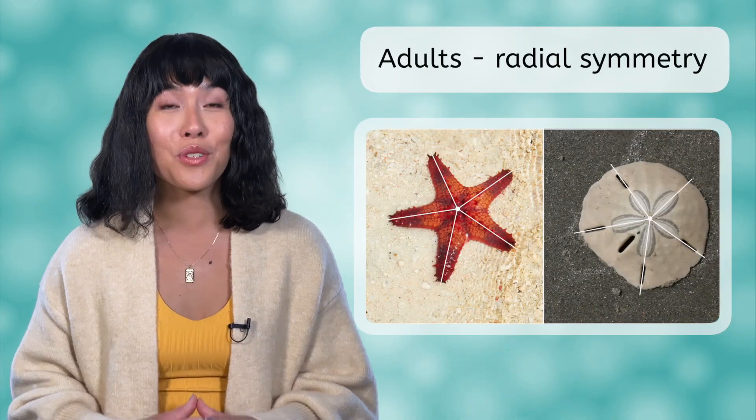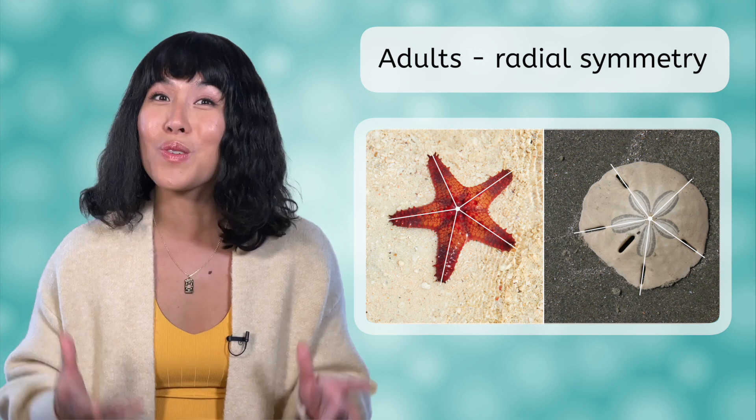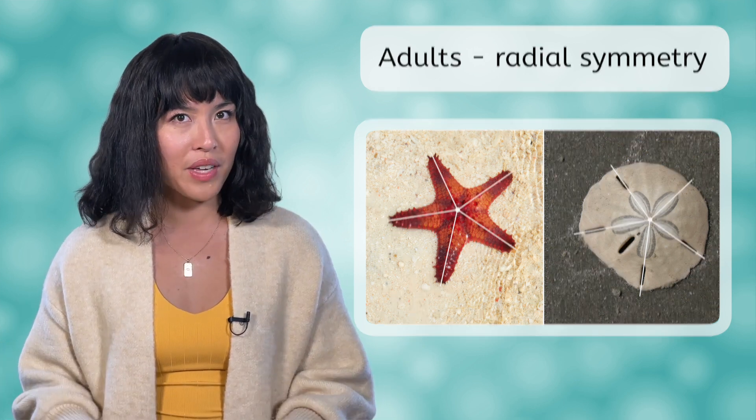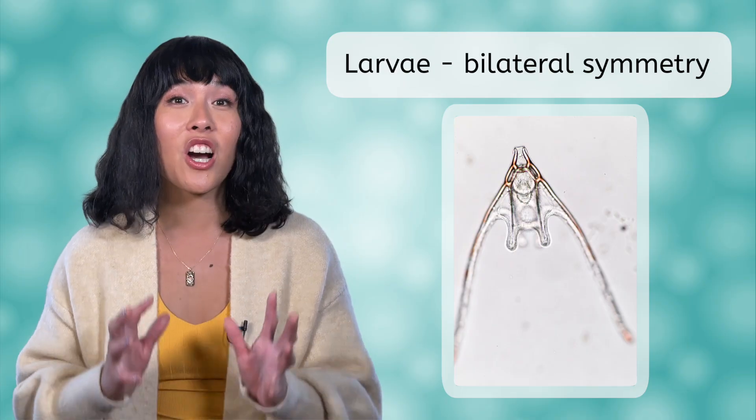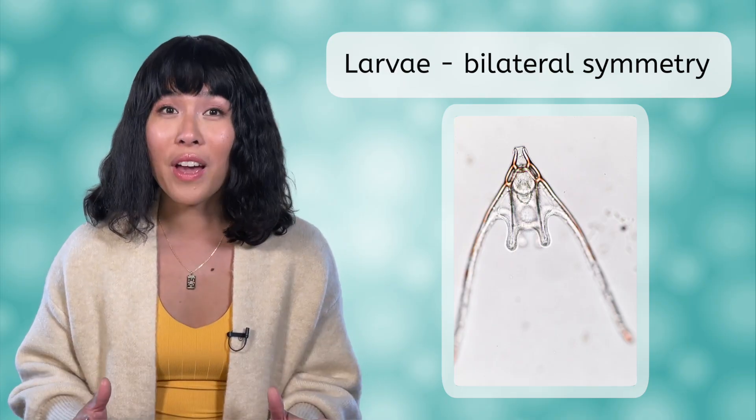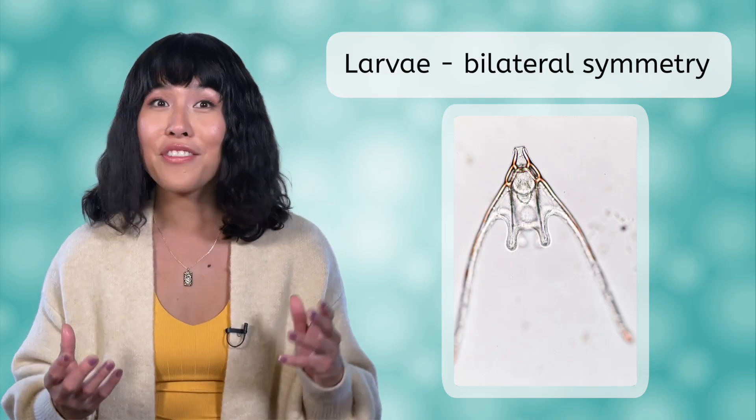What do you notice about all of these organisms? If you said they all show radial symmetry with five parts, you are right! All of the organisms in Phylum Echinodermata are arranged in this way. However, in an interesting turn of events, this symmetry is only present in adults as their larvae always show bilateral, or left and right, symmetry. Other key characteristics of these aquatic organisms include a water vascular system that helps them move and calcium carbonate ossicles that form an internal skeleton.